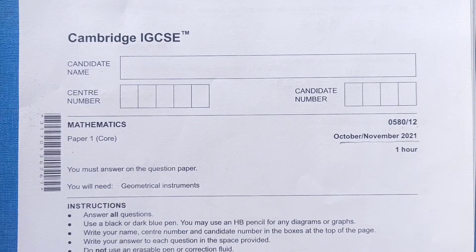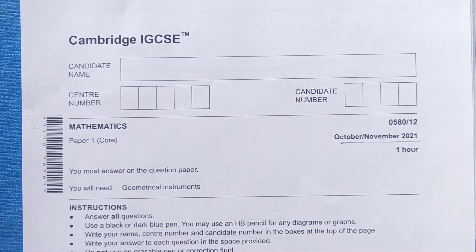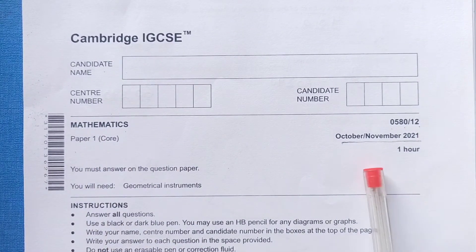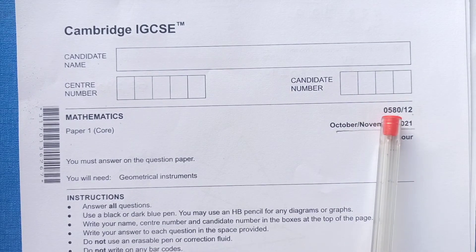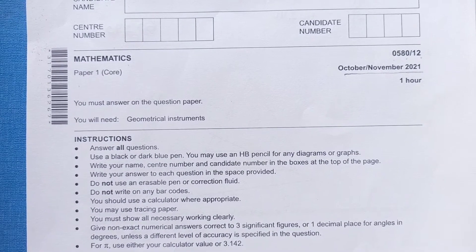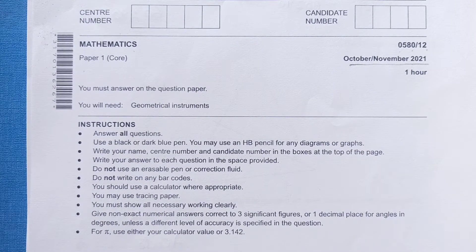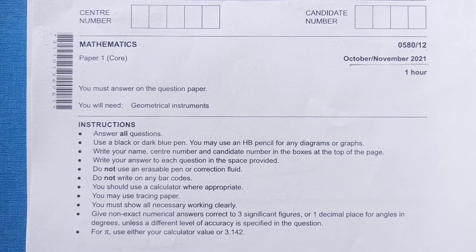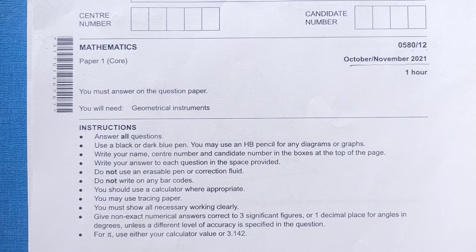Hello guys, welcome back to my channel. This is Cambridge IGCSE paper 1 core from October November 2021 series, paper 058012. In the previous video we have done questions from 1 to number 14. So in this paper we will do the remaining questions. I hope you guys have subscribed to my channel. If you have not done please do so. And let's start.